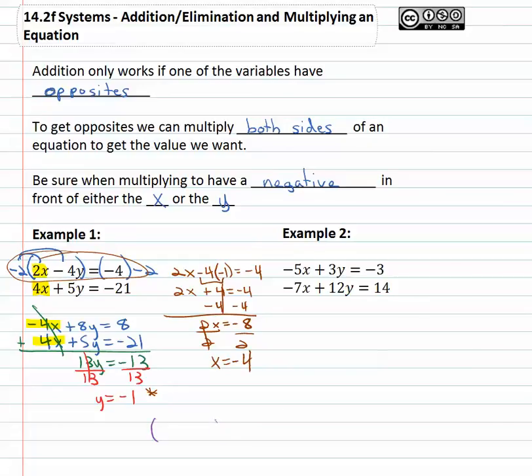And so as an x, y pair, x is negative four, y is negative one, will make the equations both true at the same time.